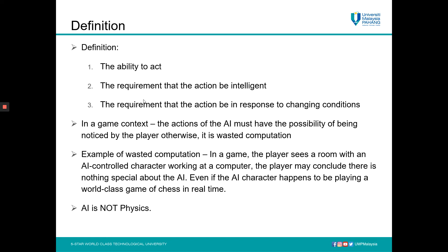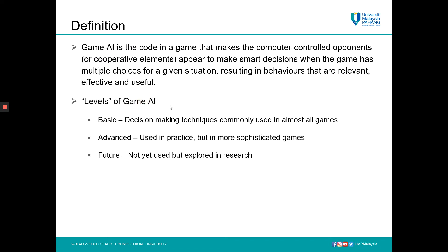AI is basically not physics. When you write code to make a character walk or transform, that is not physics — that is not AI either. Another definition is that game AI is the code in a game that makes computer-controlled opponents or cooperative elements appear to make smart decisions when the game has multiple choices for a given situation, resulting in behaviors that are relevant, effective, and useful.